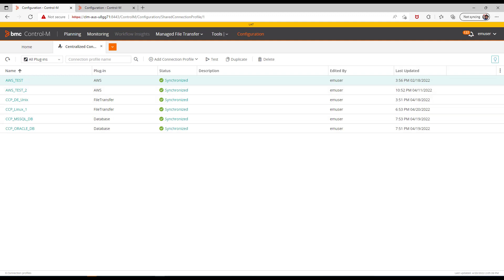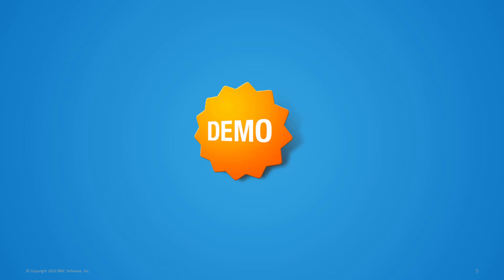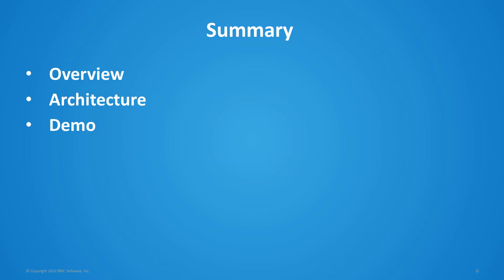With this we conclude our demo. Here is the summary of what we discussed: we provided a brief overview of centralized connection profiles, the Control-M Automation API, and briefly discussed the architecture. We demonstrated how to create connection profiles, how to test, export, import, and delete them, and how to use a deploy descriptor to convert local connection profiles to centralized connection profiles.